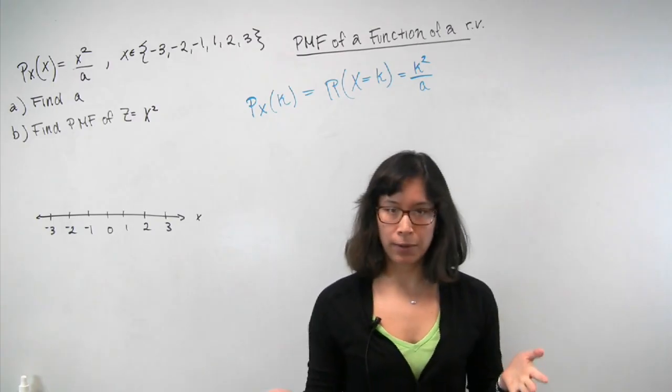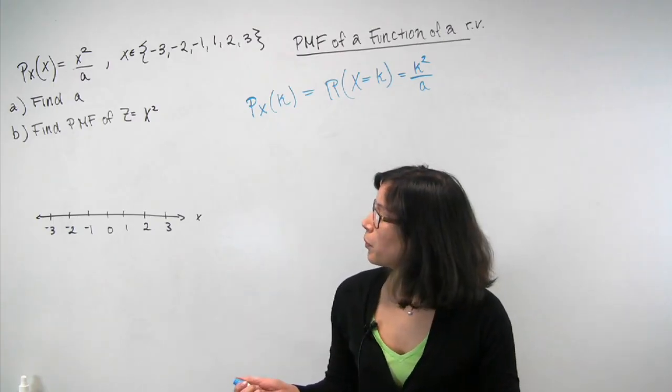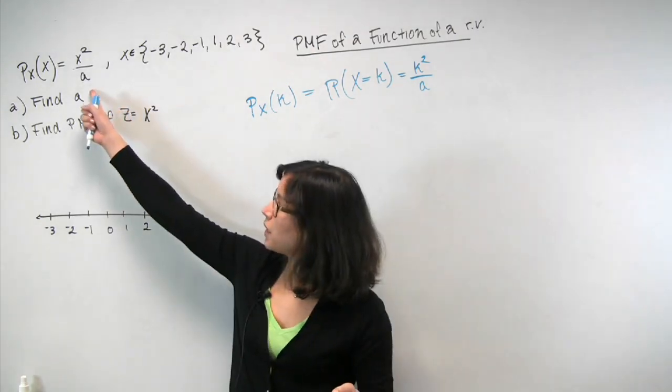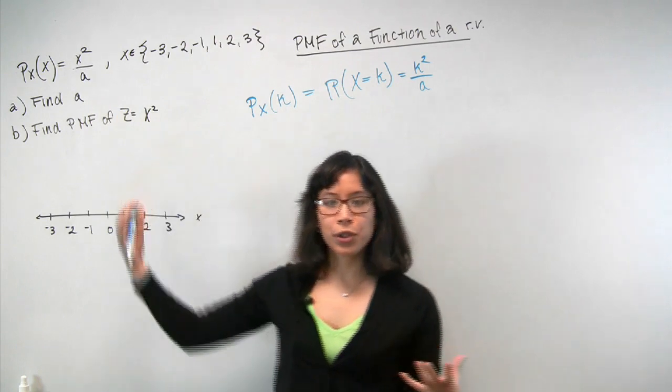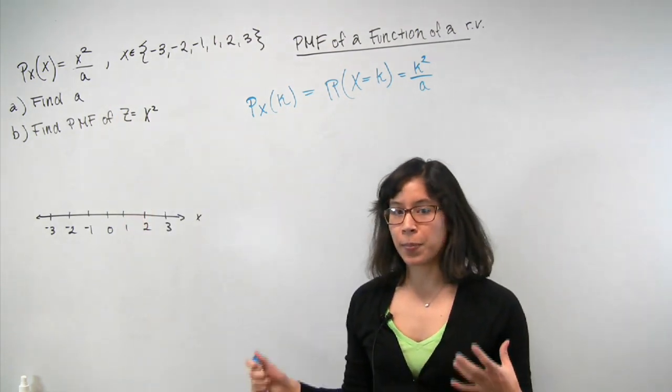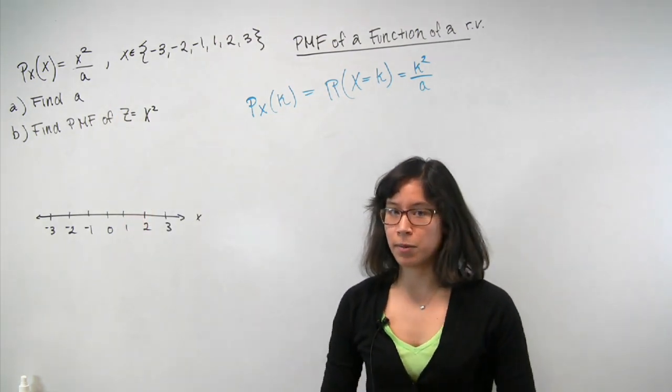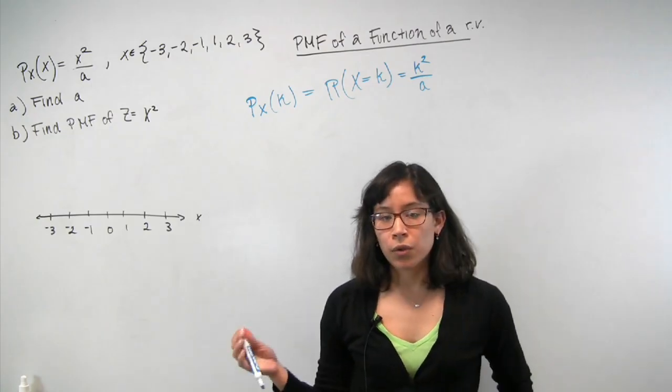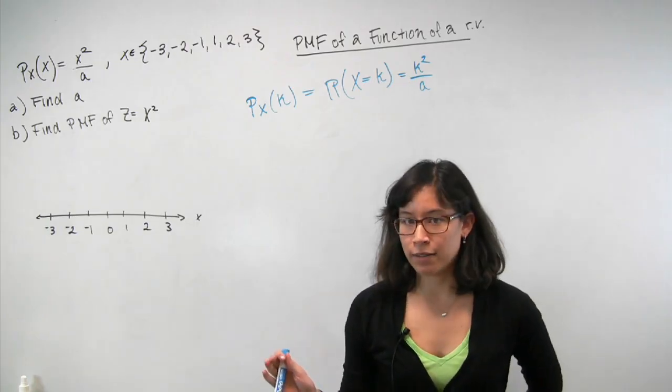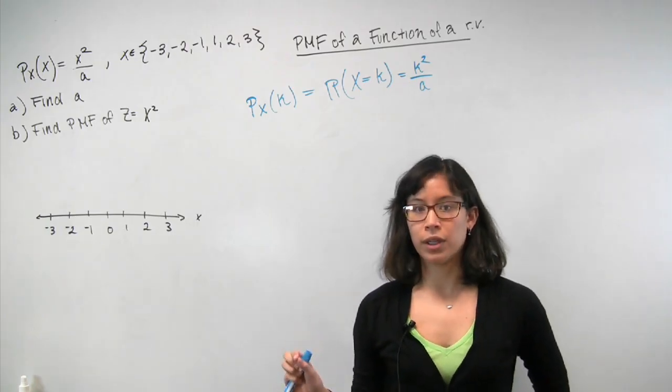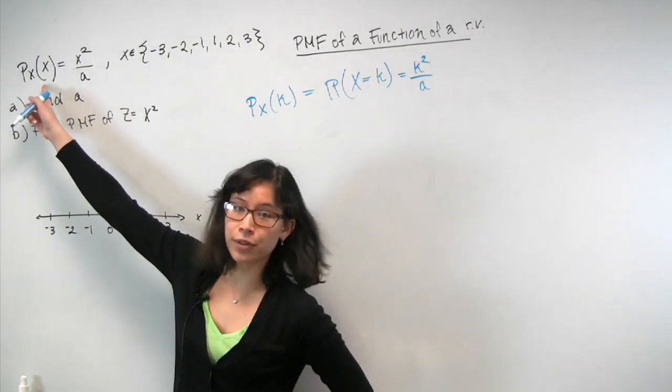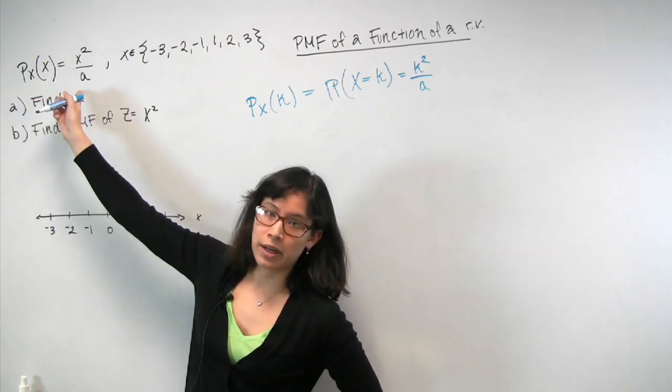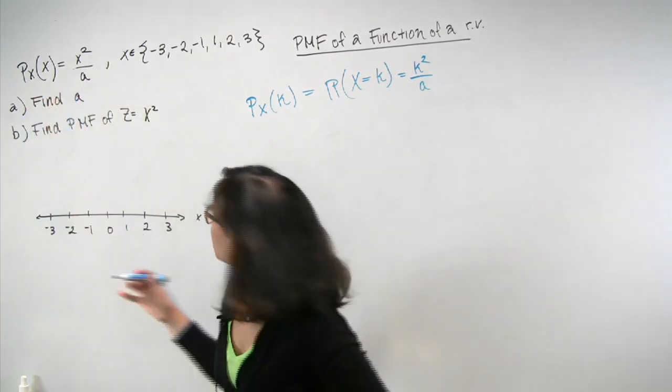So now that we've done that quick recap, let's get back to the first part of the problem. So we have this formula for p x of x, and we need to solve for a. So in order to do that, we're going to use one of our axioms of probability to set up an equation, and then we can solve precisely for a. So, namely, we know that every PMF must sum to 1. And so essentially, if you sum this guy over all possible values of x, you should get a 1, and that equation will let us solve for a. So let's do that.